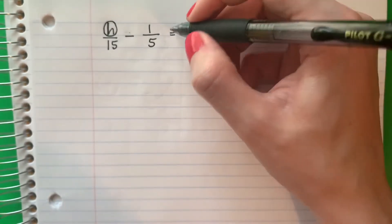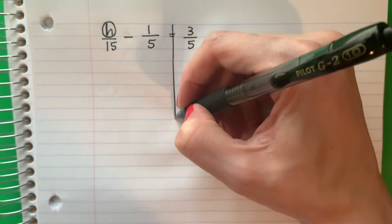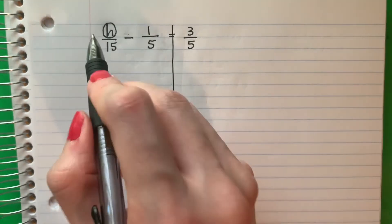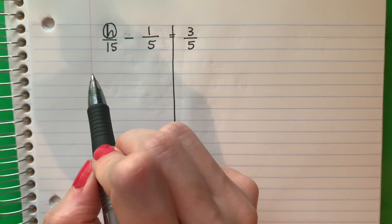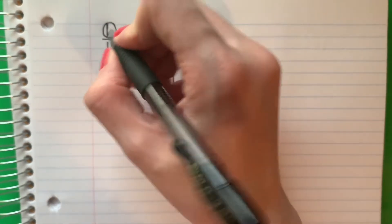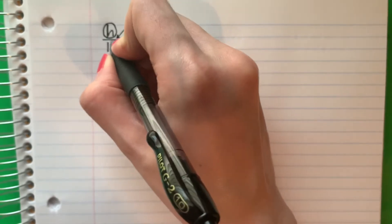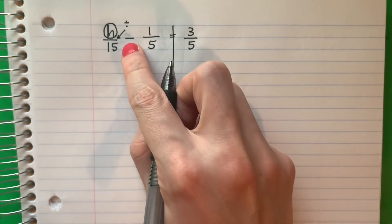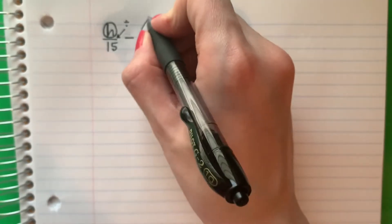So I'm going to go ahead and draw a line on the equal sign to separate the left from the right. Okay, so I want H alone. Quiero la H sola. What is with H? ¿Qué está con H? Well, I have this divided by 15. That's divide. And I have minus 1 fifth. This is minus here.